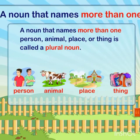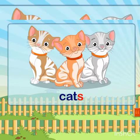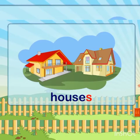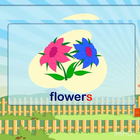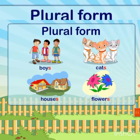As you can see in the picture, if the persons or boys are more than one, then they are 'boys.' More than one cat — 'cats.' More than one house — 'houses.' More than one flower — 'flowers.' Students, you can see when it is plural form, we add -s to the end of a noun.